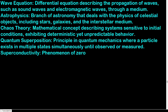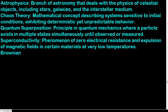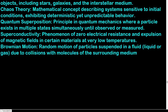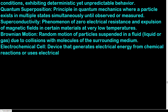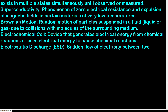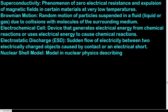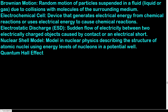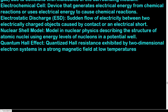Superconductivity: phenomenon of zero electrical resistance and expulsion of magnetic fields in certain materials at very low temperatures. Brownian motion: random motion of particles suspended in a fluid, due to collisions with molecules of the surrounding medium. Electrochemical cell: device that generates electrical energy from chemical reactions or uses electrical energy to cause chemical reactions. Electrostatic discharge (ESD): sudden flow of electricity between two electrically charged objects caused by contact or an electrical short. Nuclear shell model: model in nuclear physics describing the structure of atomic nuclei using energy levels of nucleons in a potential well. Quantum numbers: set of values used to describe the quantum state of an isolated quantum system, including energy levels and orbital shapes.